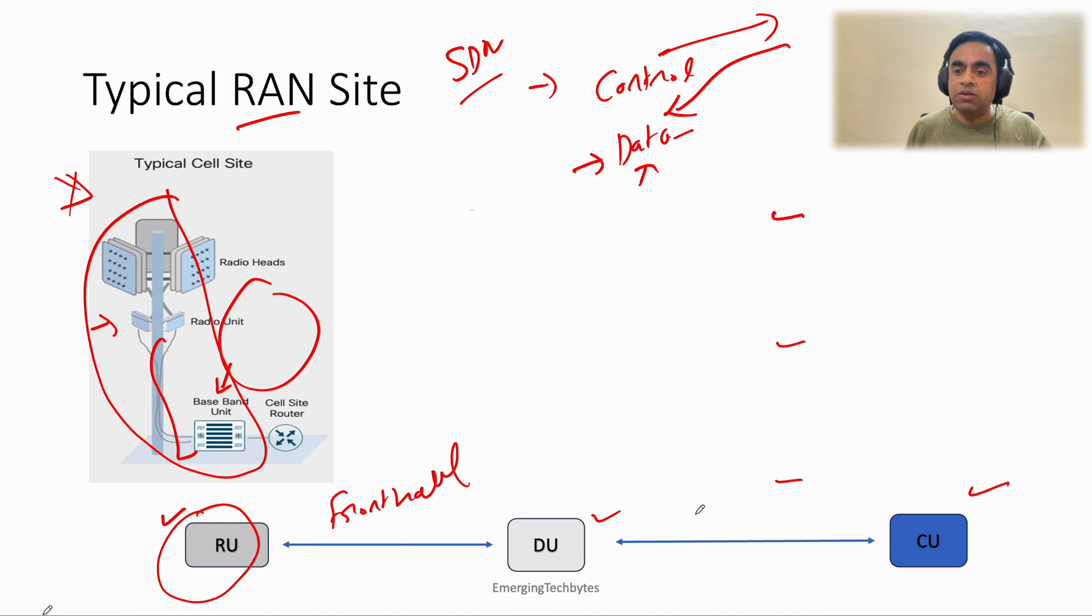The connection between DU and CU is called as mid haul. And the CU must be connected somewhere in the back with the service provider core network. That is called as back haul.